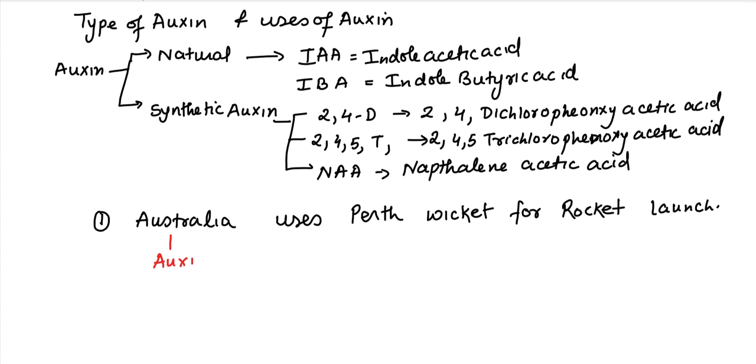Let us see what is there. Australia, you remember auxin. Uses, obviously the uses. Perth, remember parthenocarpy. Wicked, remember weedicide. For, remember flowering. And rocket, remember rooting.